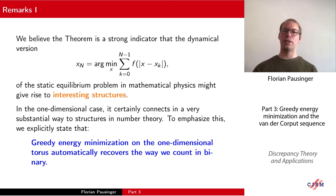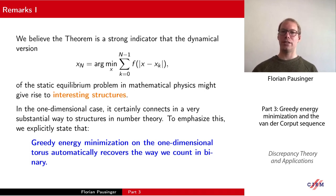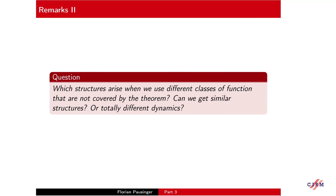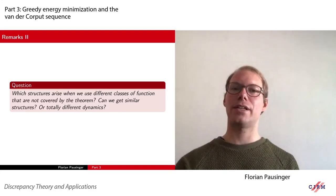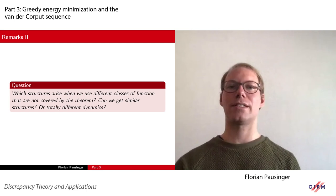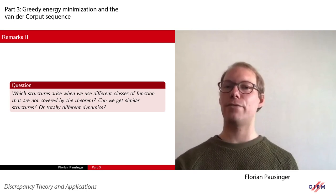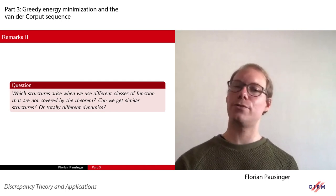This is on the one hand good because it makes it possible to prove that the output of the algorithm is actually a low-discrepancy sequence. On the other hand, it also shows that there might be some interesting structures out there that we were not able to capture without the greedy algorithm. As an interesting question: which structures arise when we use different classes of functions not covered by the theorem? If we change the assumptions on f, can we get similar structures or totally different dynamics?